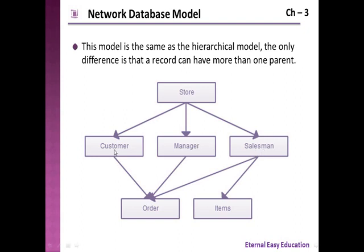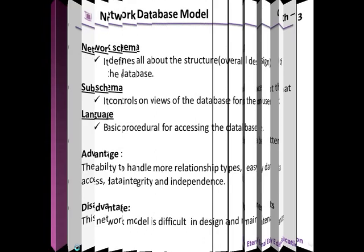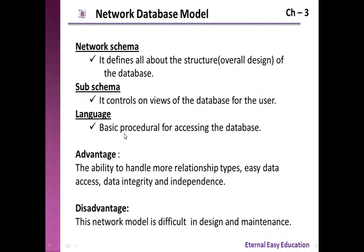For example, with store, customer, manager, and salesman, there are three links. If you want to view the order table, you can view it through the sub-schema. The third component, language, provides basic procedural access to the database. All three together — network schema, sub-schema, and language — form the network database model.